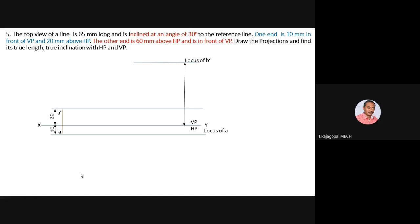No distance from VP is given for B, so we cannot fix locus of B directly. Using the top view data — 65 mm long at 30 degrees — draw the top view below XY starting from point A with 30 degree inclination and 65 mm length. For notation: true inclination with HP is theta, true inclination with VP is phi, front view inclination is alpha, and top view inclination is beta.